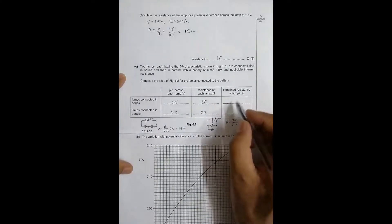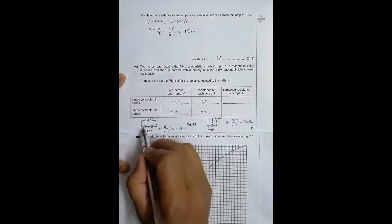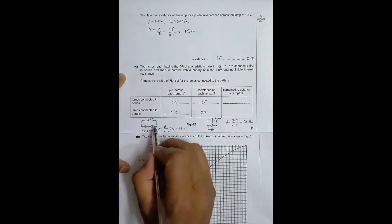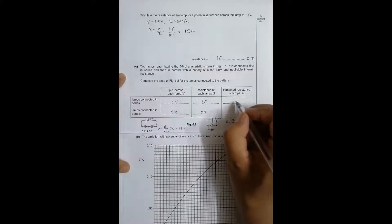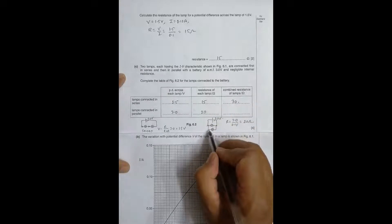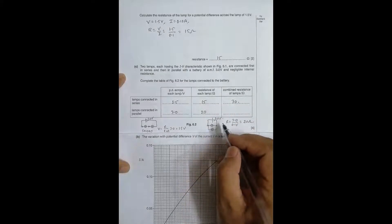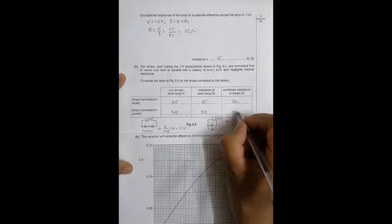The combined resistance in series is 15 + 15 = 30 ohms. The combined resistance in parallel is half of 20 ohms, because when equal resistances are connected in parallel the total is half of one — so it is 10 ohms.